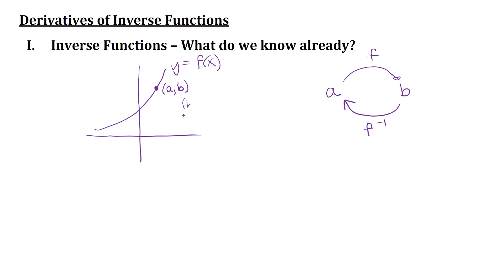So I would end up with a point B comma A on the graph of the inverse function. In general, for all points on the graph of the function, we can think about how the graph of the function and its inverse are related — they'd be reflected through the line y equals x. This is a rough sketch of the inverse function y equals f inverse of x on the same graph.